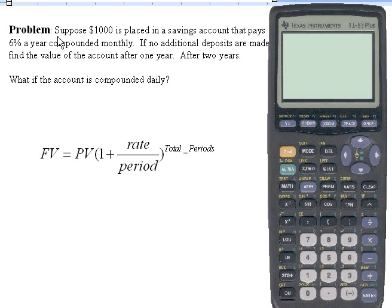So the problem we want to deal with is the following. We have $1,000 that we have in a savings account that pays 6% a year, compounded monthly. We're not making any additional payments into the account. We just want to see what the value will be after one year, two years, and maybe vary the parameters a bit. So how do we set this up?